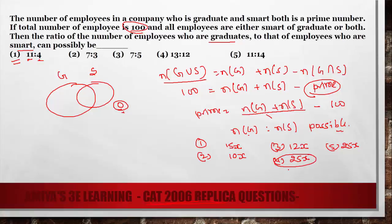Take option number 4: we want 25x minus 100 to be a prime. Taking 25 as common gives 25(x minus 4). This cannot be prime because 25 is composite — a composite number times another number cannot be prime. So option number 4 and option number 5 are eliminated because their result cannot be prime in any case.